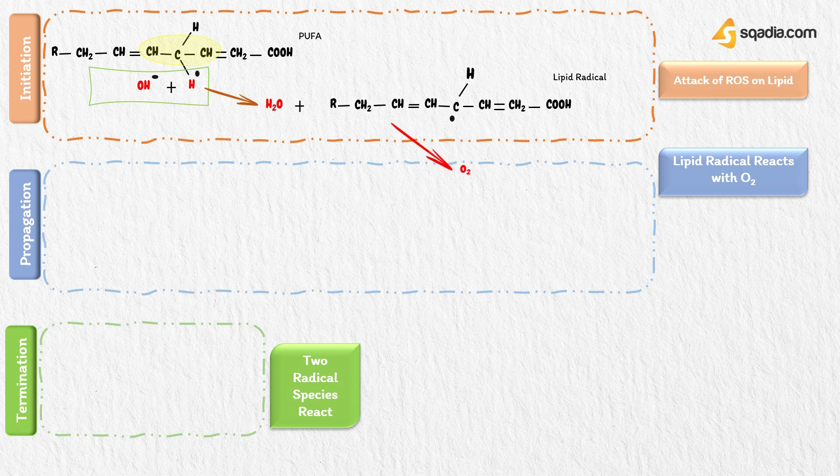In propagation, oxygen reacts with the lipid radical. These two oxygens then attack the methylene bridge. So, lipid peroxyl radical will be formed. You can also see oxygen incorporated into the structure, as there is one unpaired free radical on one oxygen. So, it is called lipid peroxyl radical. That's why this reaction is called lipid peroxidation reaction.